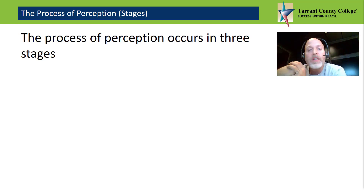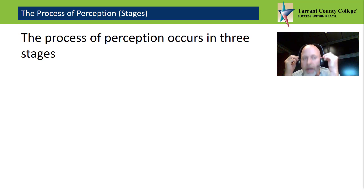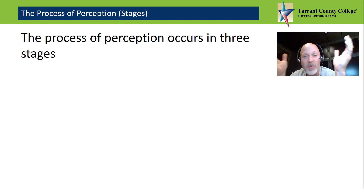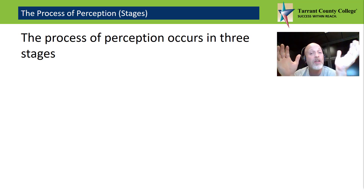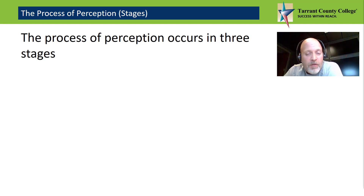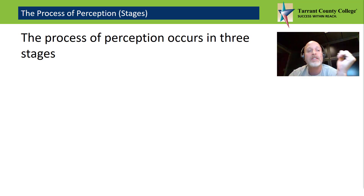We're involved in interpersonal perception constantly. Your mind usually selects, organizes, and interprets information so quickly and so subconsciously that you may think your perceptions are objective — factual reflections of the world. Selection, organization, and interpretation are the three basic stages of perception.